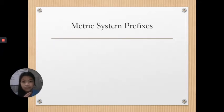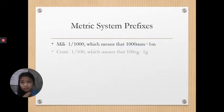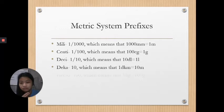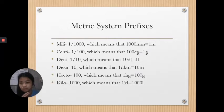The metric system prefixes. For milli, we have one over one thousand, which means that one thousand millimeters is equal to one meter. Then centi, deci, deca, hecto, and kilo. So we have metric system prefixes.